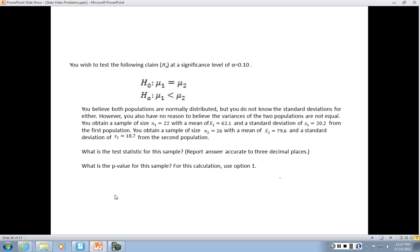You believe both populations are normally distributed, but you do not know the standard deviations for either. However, you also have no reason to believe that the variations of the two populations are not equal. So you obtain a sample from each with x-bars and sample standard deviations for each.